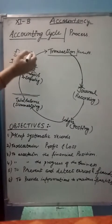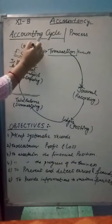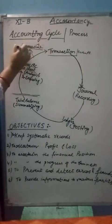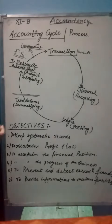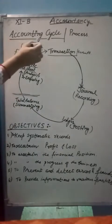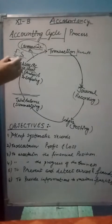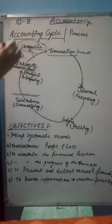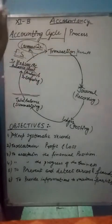Then the last thing we have to do is communicate. Listed companies and firms are communicating their results; otherwise it is not mandatory. So this is your accounting cycle and process.